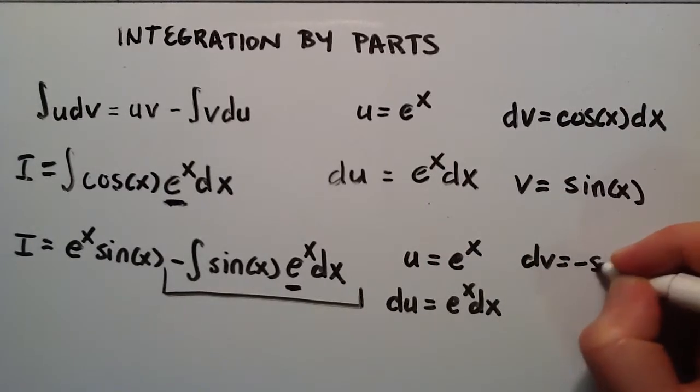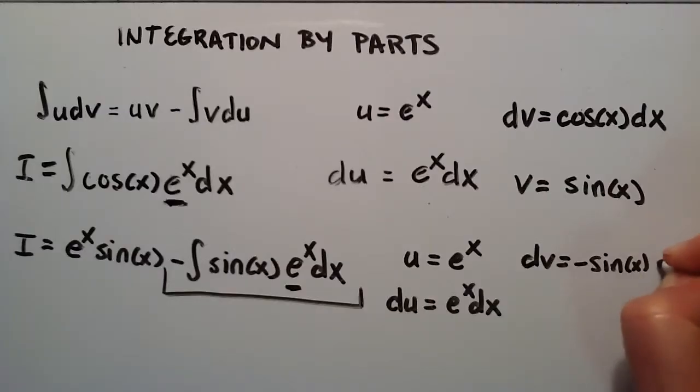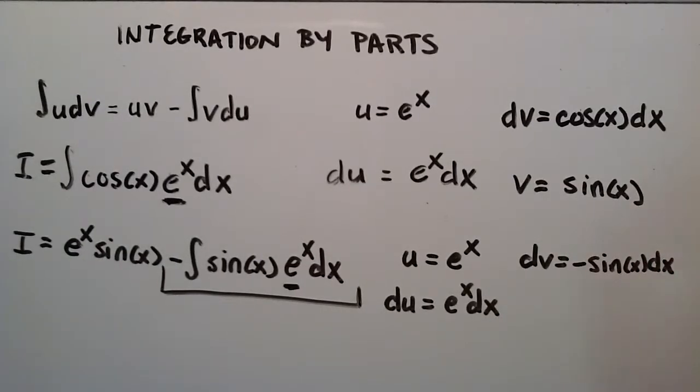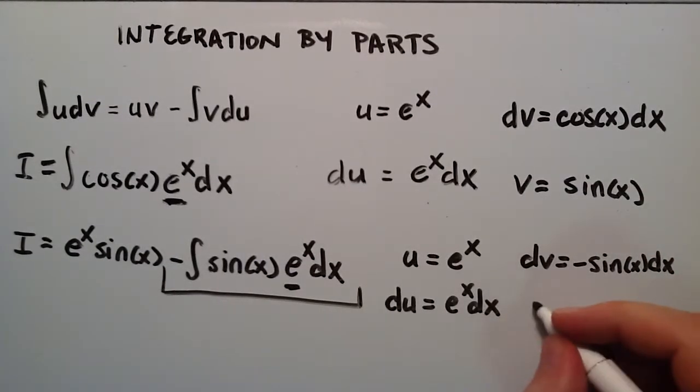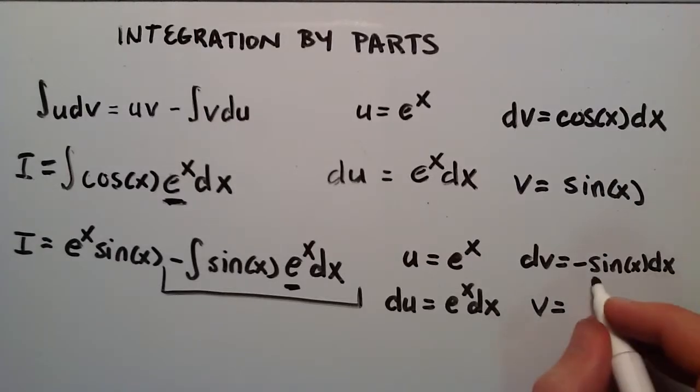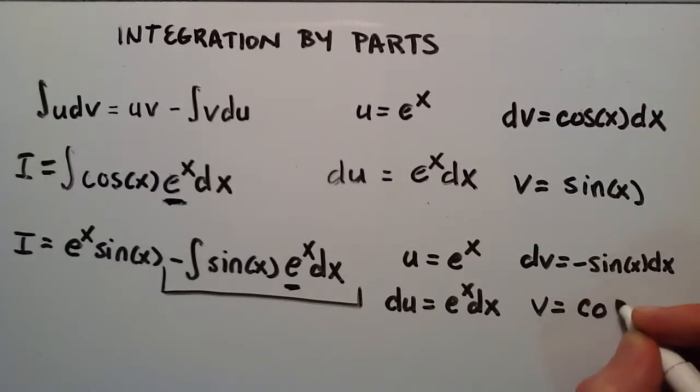And I'm going to take negative sine x dx to be my dv. So dv is negative sine x dx. And if we integrate the left-hand side, we get v. And integrating sine gives us negative cosine, but we have another negative here. So the negative times the negative is going to give us a positive cosine.